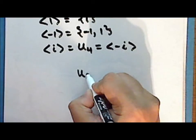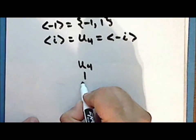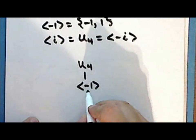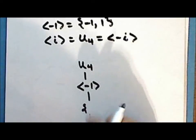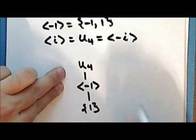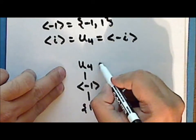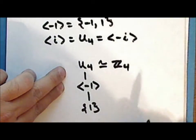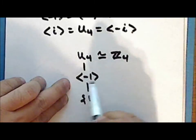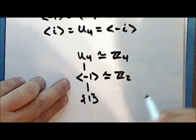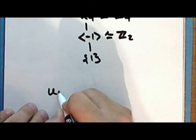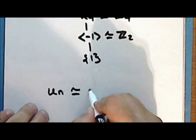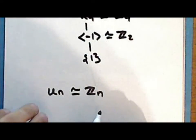If we look at the subgroup diagram for the fourth roots of unity, it has as a proper subgroup the cyclic subgroup generated by −1 and the trivial subgroup. Notice that the fourth roots of unity under multiplication is isomorphic to the integers modulo 4 under addition modulo 4. The cyclic subgroup generated by −1 is isomorphic to the integers modulo 2 under addition modulo 2. And in general, the nth roots of unity under multiplication is isomorphic to the integers modulo n under addition modulo n.